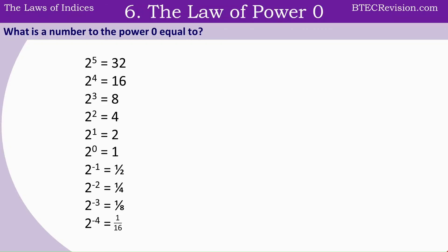The sixth law is the law of power 0. Looking at these numbers, you can see that if we have a power of 0, that's always going to give us 1. This is true for any number — so 5 to the power of 0 is equal to 1, and 100 to the power of 0 is equal to 1. Any number to the power of 0 is always equal to 1.